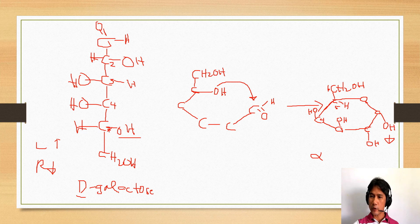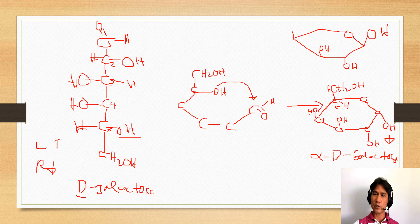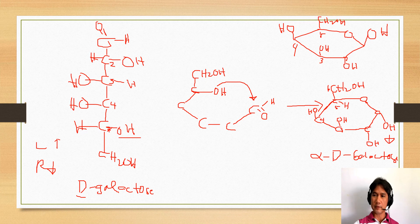So this is the alpha form, and the name becomes alpha-D-galactose. The other form is, of course, the beta form, where the OH on carbon number one points upward. The positions of the OHs on carbon numbers two, three, and four remain the same in both alpha and beta — they do not change. Only the position of the OH on the anomeric carbon differs between alpha and beta.